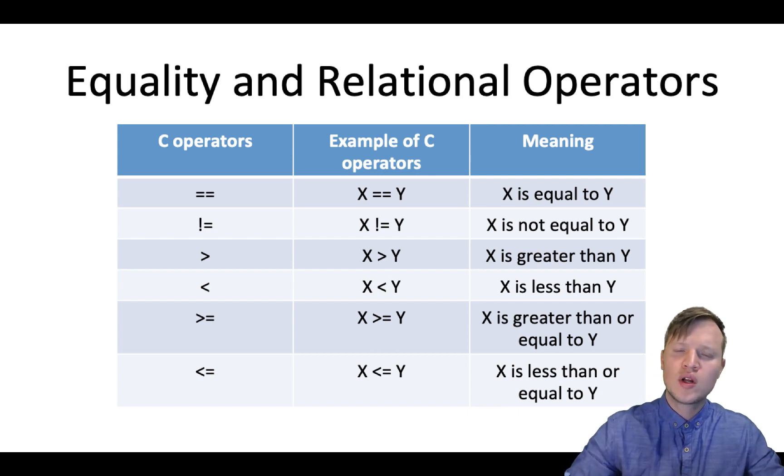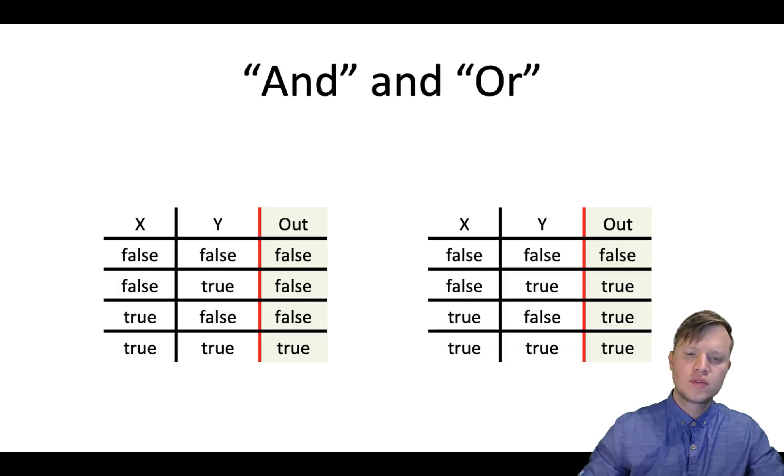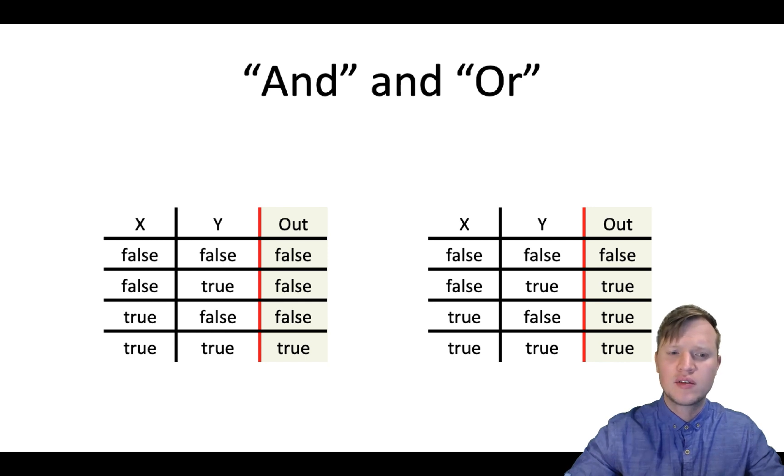Now that we understand equality and relational operators we can also have a look at the AND and the OR operator. The AND operator truth table you can see on the left hand side where we have x y as our two inputs and there will be a result out that will be either false or true.